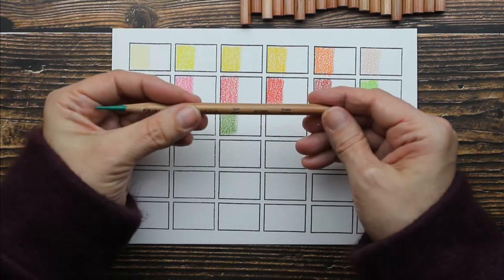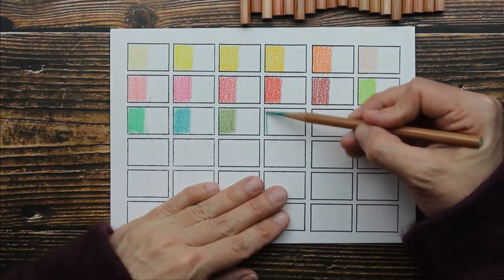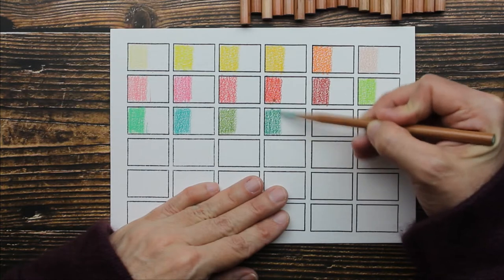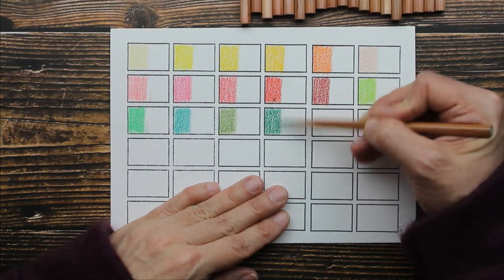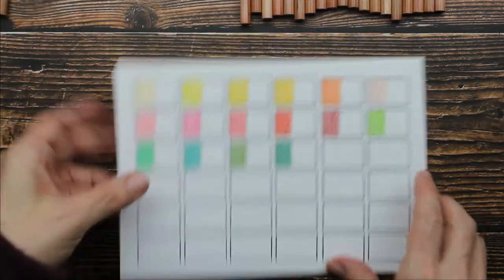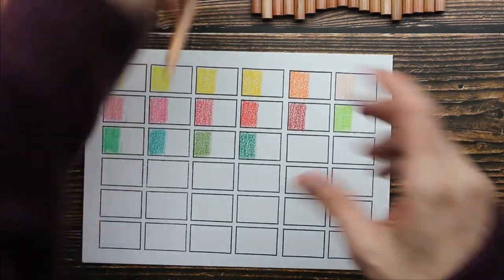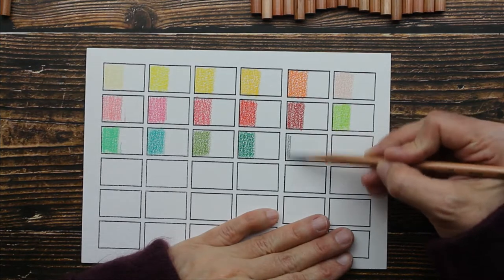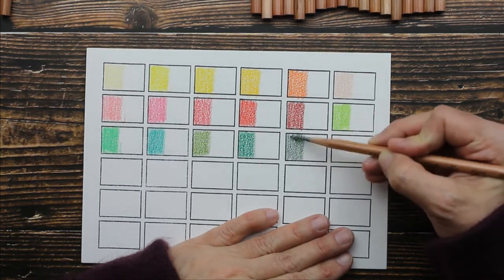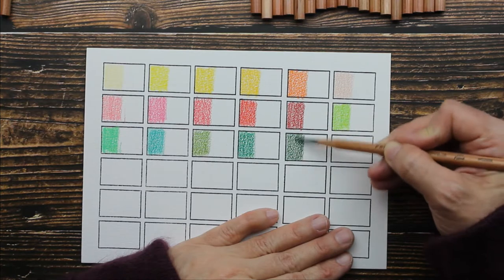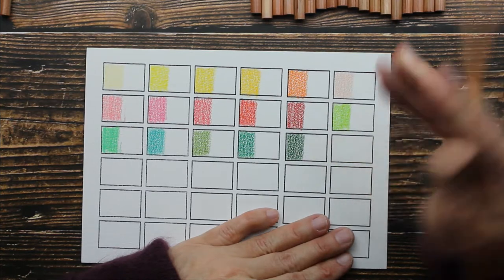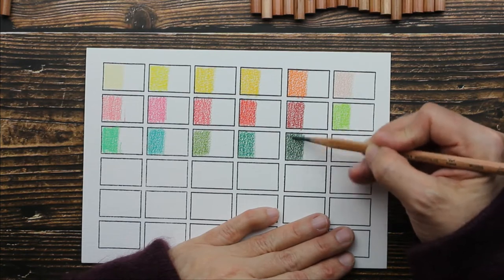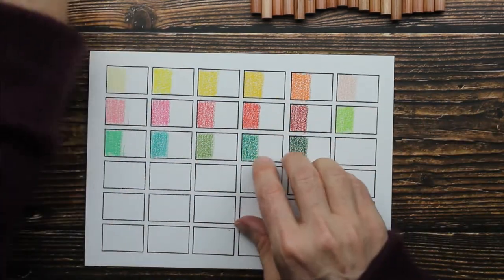Now we have Grass Green. And then our last green we have is called Dark Green. Now, this is a set of 36. They come in sets of like 12, 24, and 36. I think 36 is the largest of the sets.